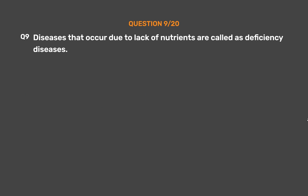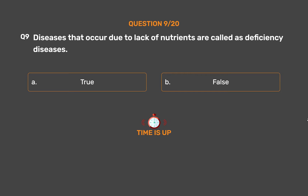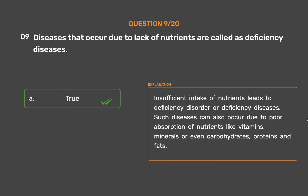Question number 9. Diseases that occur due to lack of nutrients are called deficiency diseases. Option A - True. Option B - False. The correct answer is Option A - True. Insufficient intake of nutrients leads to deficiency disorders or deficiency diseases. Such diseases can also occur due to poor absorption of nutrients like vitamins, minerals, or even carbohydrates, proteins, and fats.